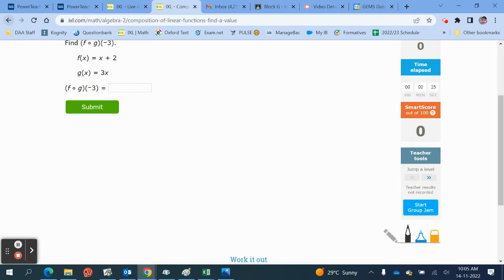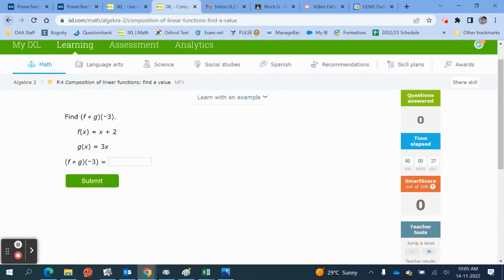Let me get my pen. So, here we're asked to find f of g of minus 3. What we've got here with this one is we've got two functions. Our first function is going to be the function g, because this is on the right-hand side here.